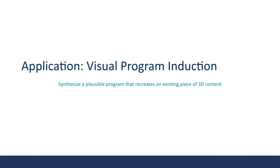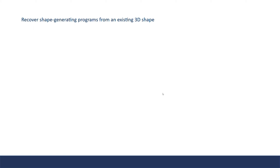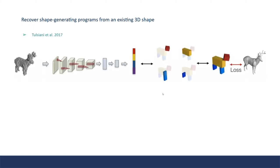Now let's move on to the application of visual program induction, which means to synthesize a plausible program that recreates some 3D content. This involves recovering the generator program from existing 3D shapes. Some early instances learn to reconstruct 3D shapes via simple geometric primitives. For example, this 2017 work learns to decompose shapes into primitives and use chamfer distance as a loss function.